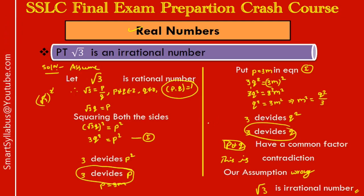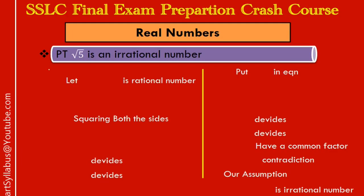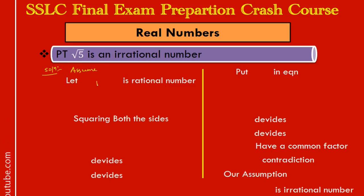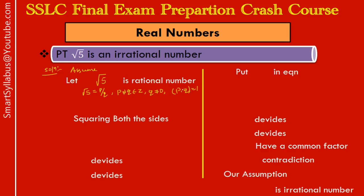Let's take one more sum to understand this even better. Prove that root 5 is an irrational number. Solution: first, assume that root 5 is a rational number. Since it is rational, we write root 5 = p/q, where p and q belong to the integers, q ≠ 0, and p and q are co-primes — their common factor is only 1. This co-primes statement will help us solve the entire sum.